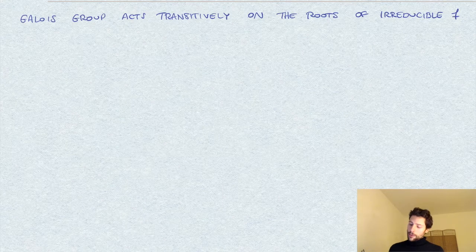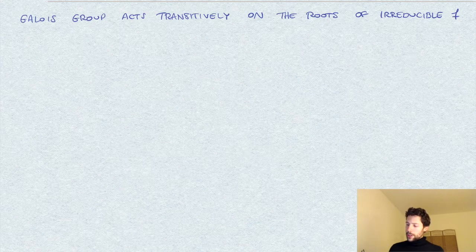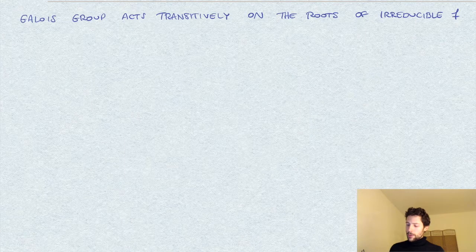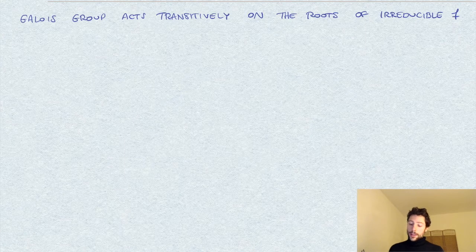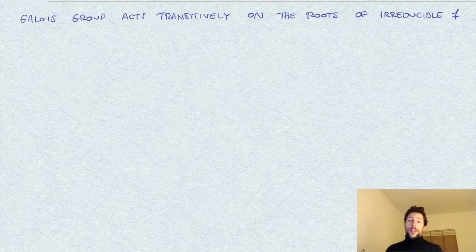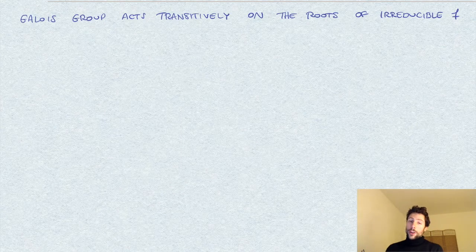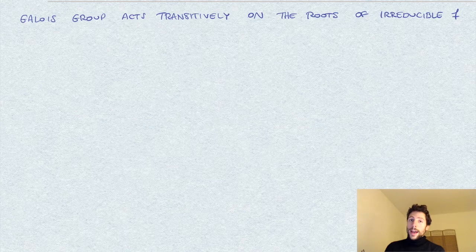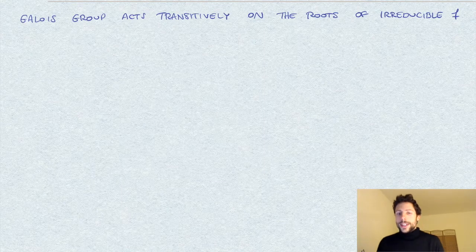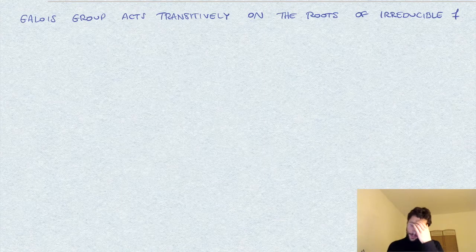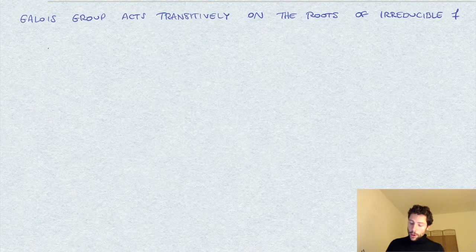I'll now give a proof of a fact I've used in previous exercises: when we consider the splitting field of an irreducible polynomial, the Galois group acts transitively on the set of roots of the polynomial.